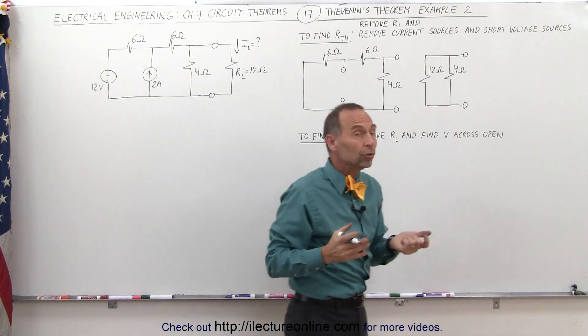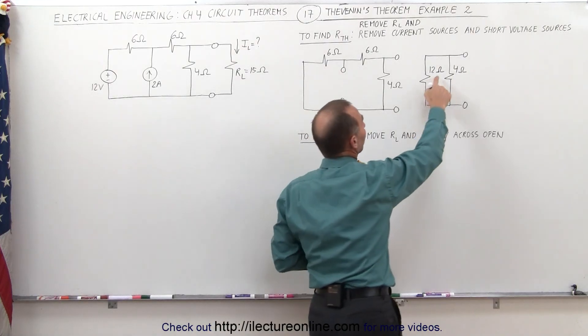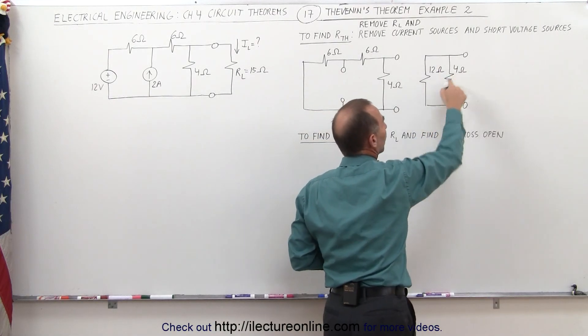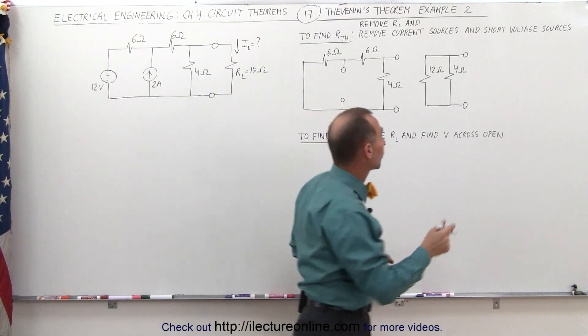Since they're in parallel, we use the product over the sum. 12 times 4 is 48. 12 plus 4 is 16. 48 divided by 16, that's equal to 3.